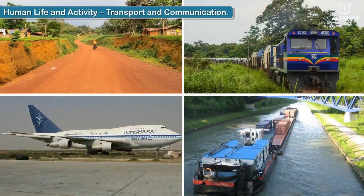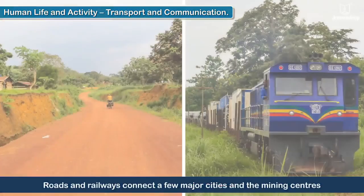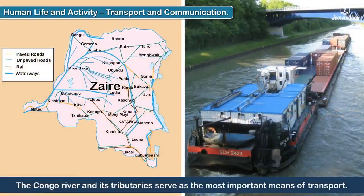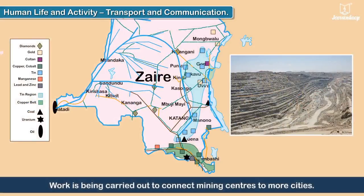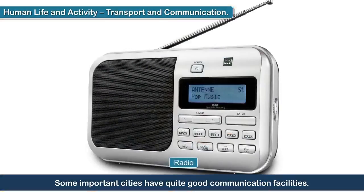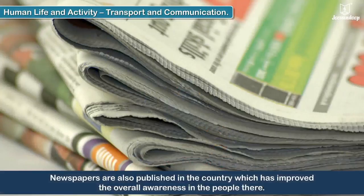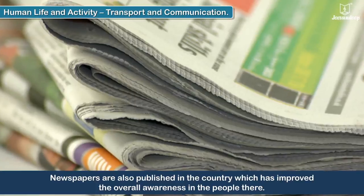Transport and Communication: Roads and railways connect a few major cities and the mining centers. The Congo river and its tributaries serve as the most important means of transport. Work is being carried out to connect mining centers to more cities. Some important cities have quite good communication facilities such as telephones, radio and television as well as satellite communication link up. Newspapers are also published in the country, which has improved the overall awareness in the people there.